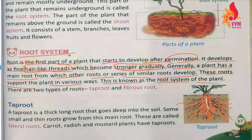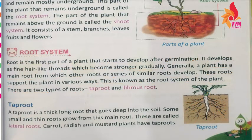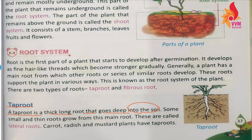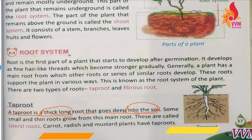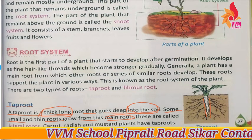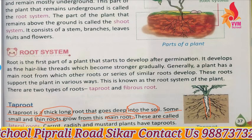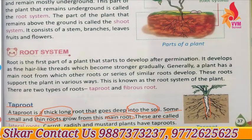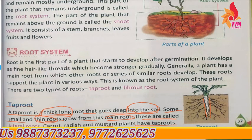There are two types of roots: tap roots and fibrous roots. First we have tap roots and next we have fibrous roots. A tap root is a thick, long root that goes deep into the soil. Some small and thin roots grow from this main root — these are called lateral roots. Carrot, radish, and mustard plants have tap roots.